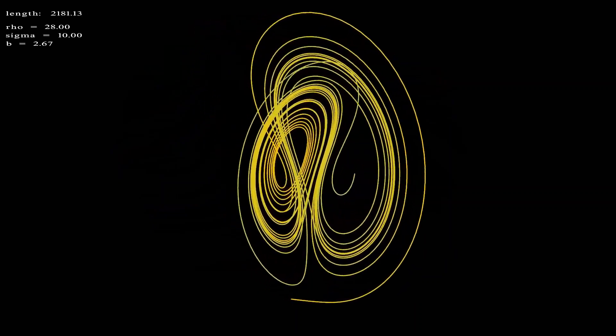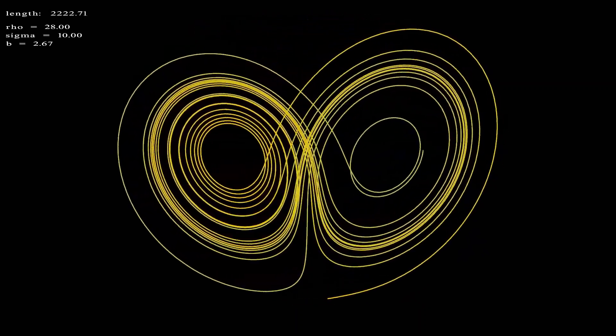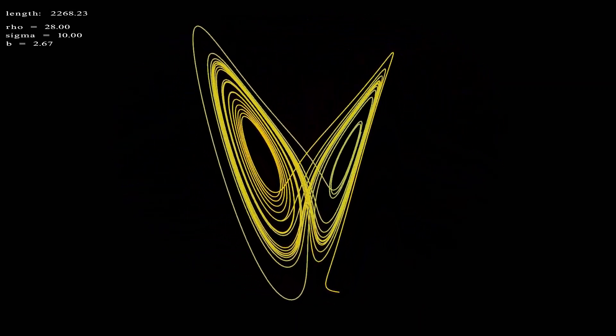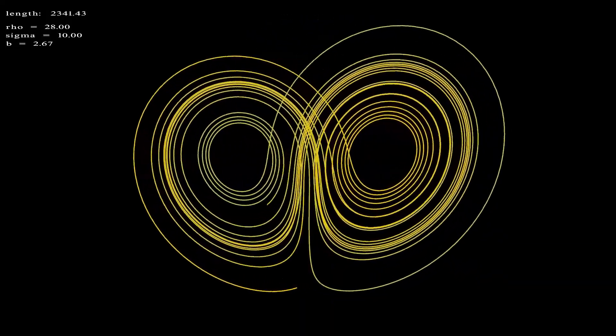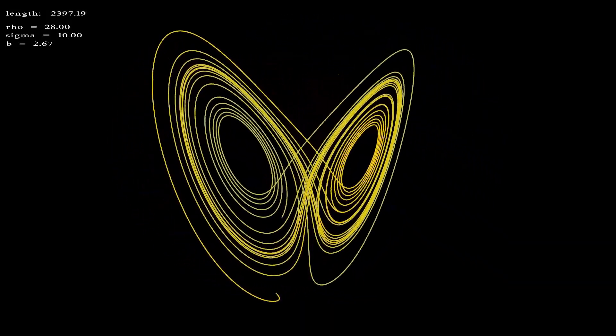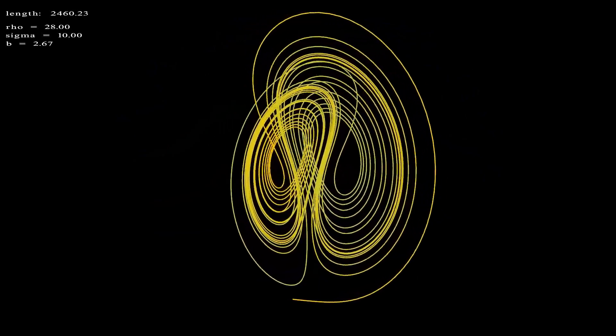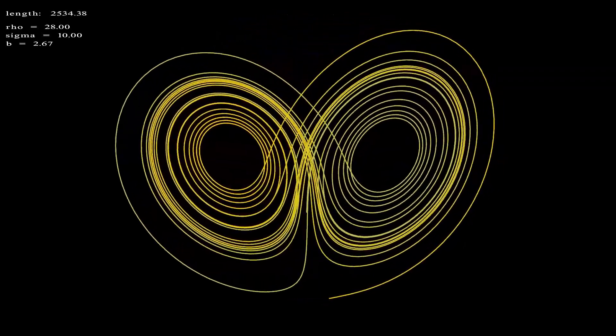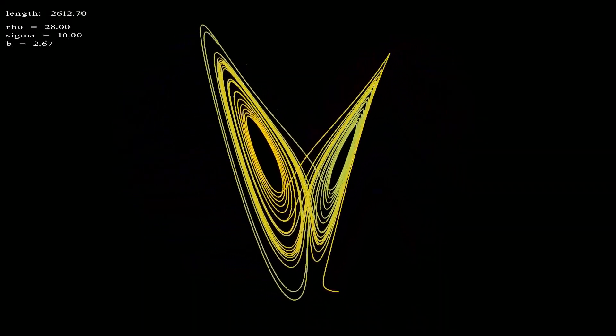But that randomness is constrained. The trajectory never sprays outside the margin of the attractor.